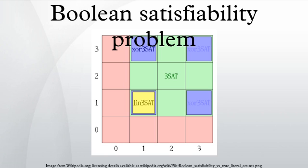SAT is one of the first problems that was proven to be NP-complete. This means that all problems in the complexity class NP, which includes a wide range of natural decision and optimization problems, are at most as difficult to solve as SAT. There is no known algorithm that efficiently solves SAT, and it is generally believed that no such algorithm exists. Yet this belief has not been proven mathematically, and resolving the question whether SAT has an efficient algorithm is equivalent to the P versus NP problem, which is the most famous open problem in the theory of computing.